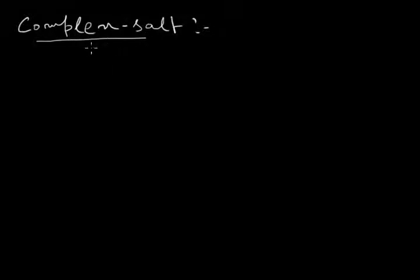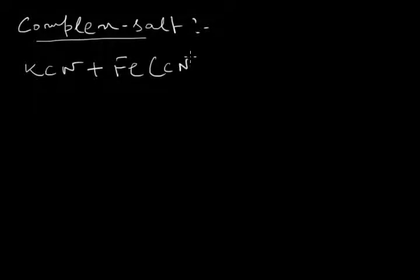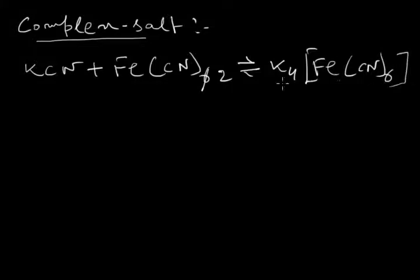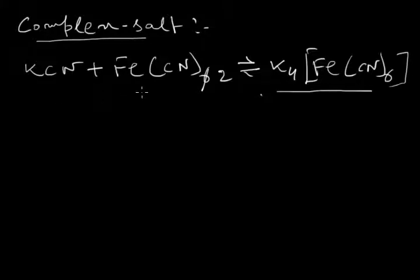Now, complex salts. A complex salt is formed when two or more salts react with each other. When potassium cyanide reacts with ferrocyanide, we get a salt K₄[Fe(CN)₆], which is called potassium ferrocyanide. This potassium ferrocyanide is a complex salt because it is formed by mixing potassium cyanide and ferrocyanide.